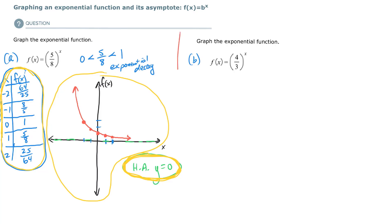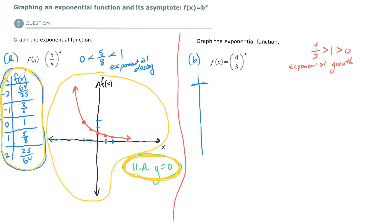Let's do the second example. This time the f of x has changed — the base is more than 1 and greater than 0. This is now going to be exponential growth. From left to right, this function is going to be increasing. We could easily create a t-table of ordered pairs: negative 2, negative 1, 0, 1, 2. You could pause the video now and try to get the output values on your own.